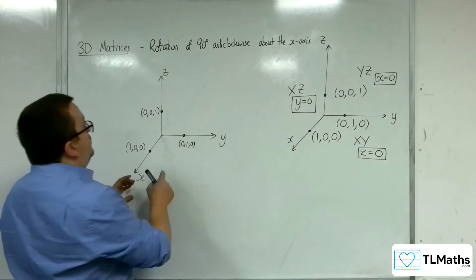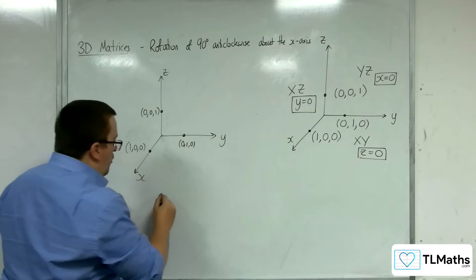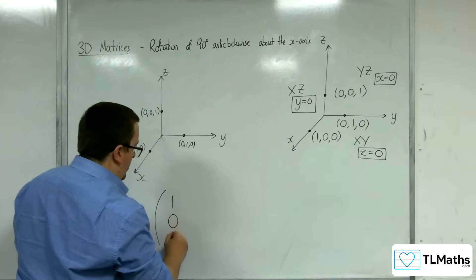So, if I'm rotating about the x-axis, the 1, 0, 0 will remain fixed.